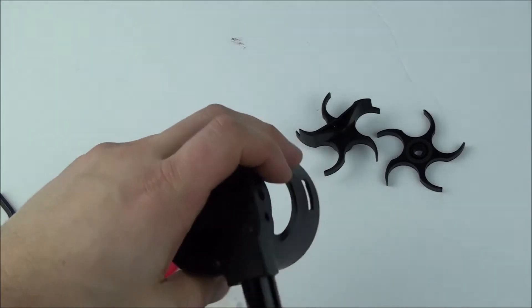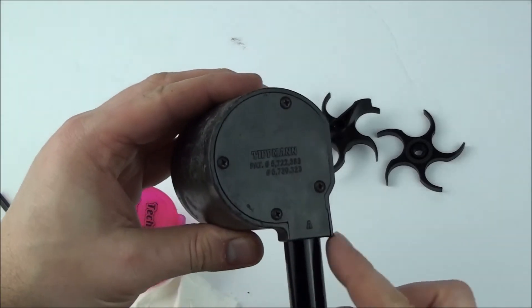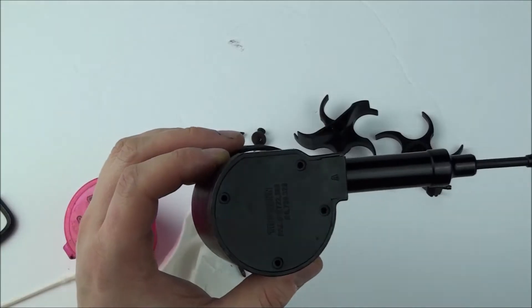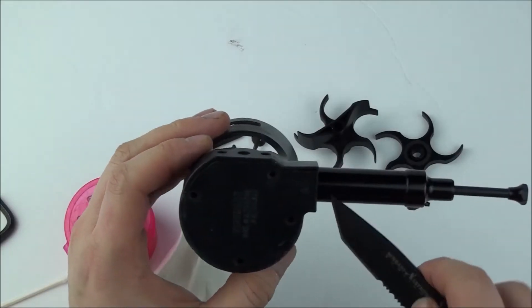Now it is time to flip the Cyclone over and remove the additional number 8 screws from the feeder bottom plate. Once all four are out, carefully remove the bottom plate. Inside here are the guts of the Cyclone.